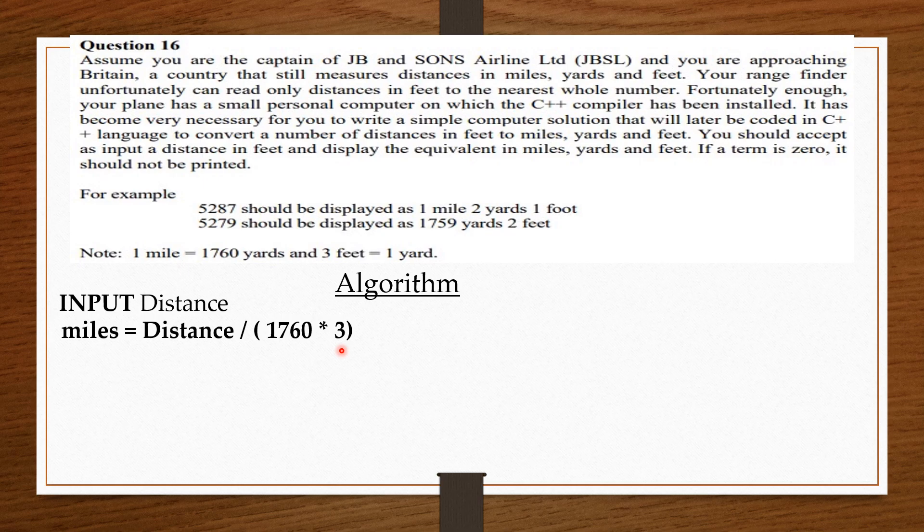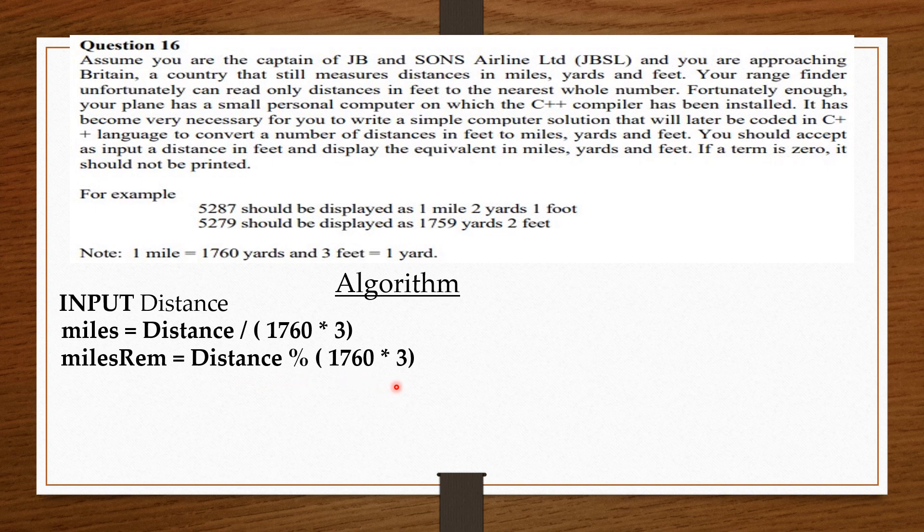Now, after converting the distance into miles, we are going to check if there is a remainder. So, we say milesRem = Distance % (1760 * 3). Now, if there is a remainder, indeed, with our knowledge from mathematics again, we are going to convert this remainder, which is in feet, into yards. According to the question, three feet equals one yard. So, to convert to yards, we say yards = milesRem / 3.